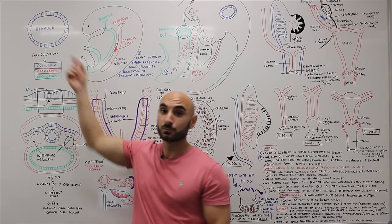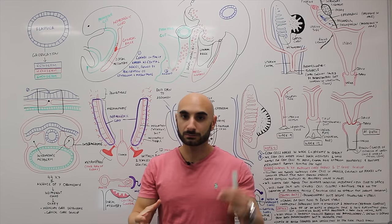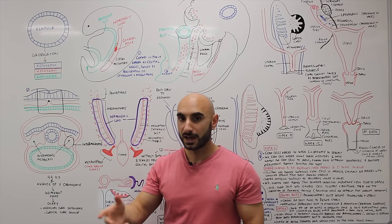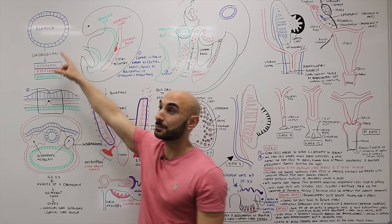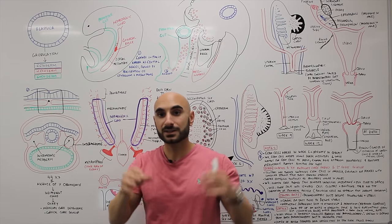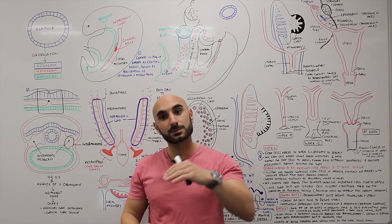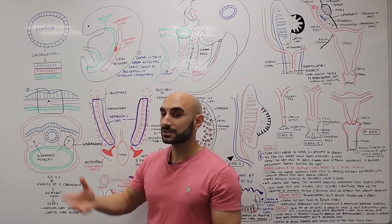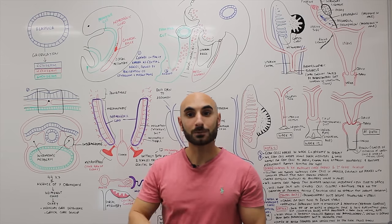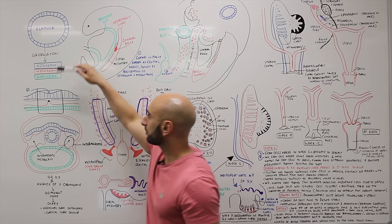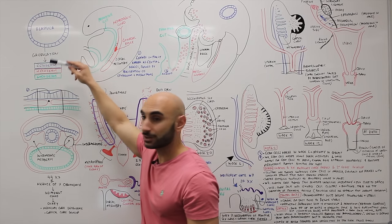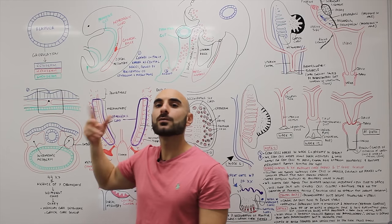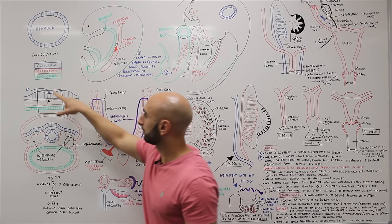We begin with a blastula, which is a result of fertilization, where a sperm and an egg fuse and a ball of cells are made — that is the blastula. The blastula moves down the uterine tubes into the uterine cavity and implants into the uterine wall. A process of gastrulation will form three germ layers: ectoderm, mesoderm, and endoderm.